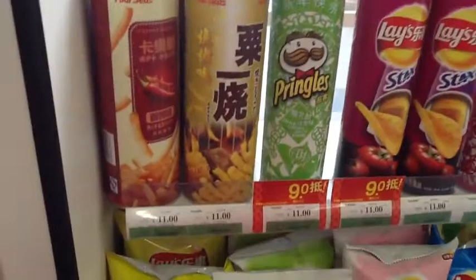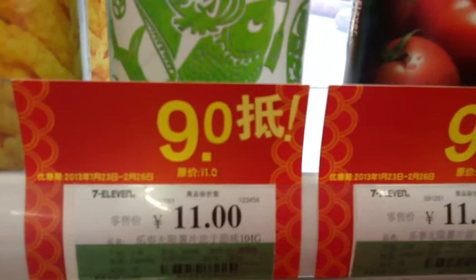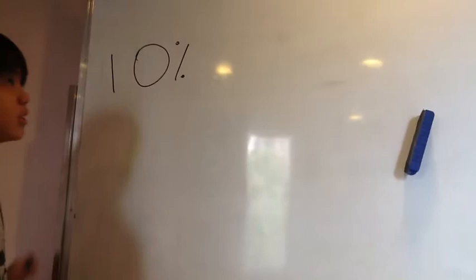Hello everybody, today we're going to show you how to calculate discounts. We're doing discount on Pringles. Now the original price is 11 RMB and as you can see over here it's 10% off.